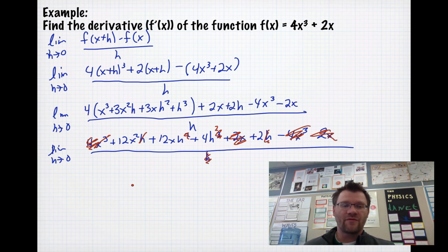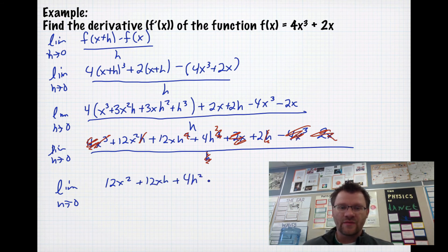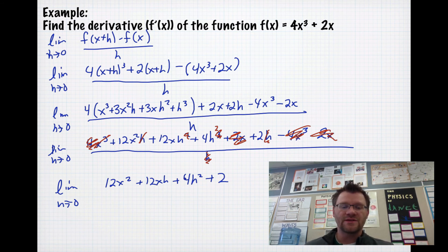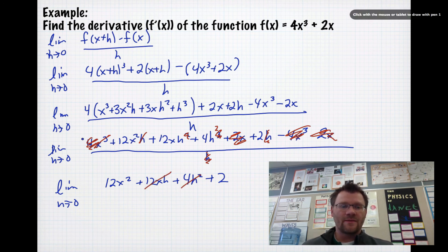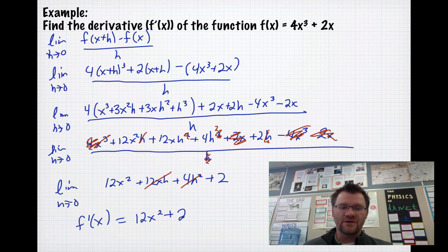What we're left with before we plug in h equals 0 is 12x² + 12xh + 4h² + 2. Now as h approaches 0, that means we can plug in 0 for any h's that are left. We get that and that canceling out because that's just 0 and 0. So in the end, f'(x), or our derivative, is 12x² + 2.